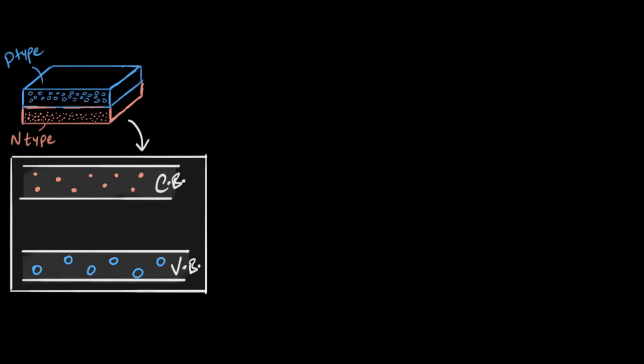And the way they work is when you forward bias them—that is, attach a positive to the P-type and a negative to the N-type—the electrons and the holes start recombining. And when they do that, the electrons move from a higher energy level to a lower energy level, and in the process of doing that, they start giving out light.